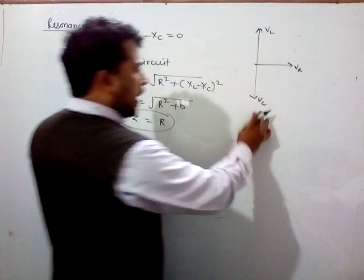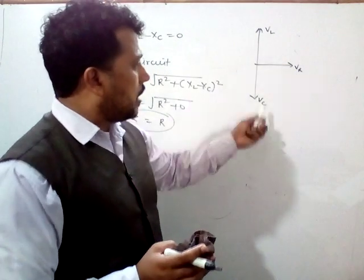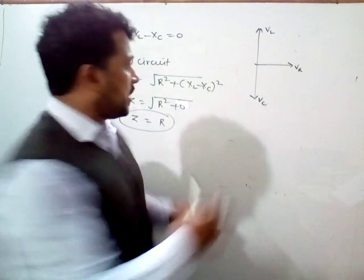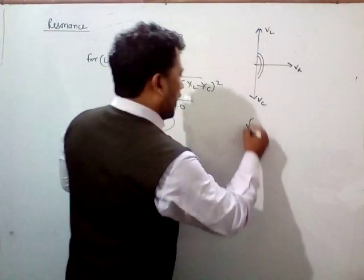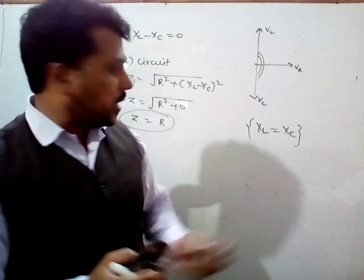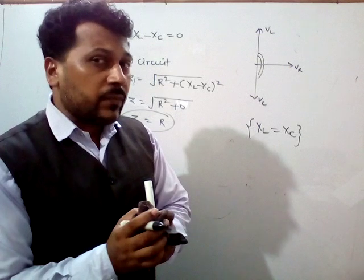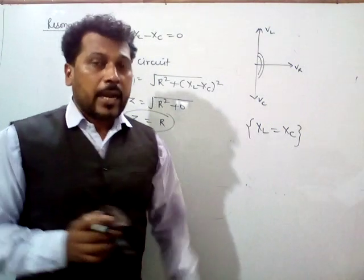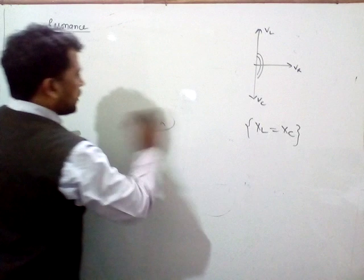In the LCR circuit, VL and VC are attached oppositely with each other. Under certain conditions, VL may equal VC, or XL may equal XC. This is the particular condition when the phase difference is 180 degrees between VL and VC. When XL equals XC, this is the resonance state. The impedance of the LC circuit equals the ohmic resistance, and this condition is known as resonance. The frequency formed in this condition is known as the resonance frequency.